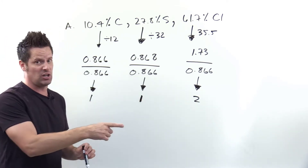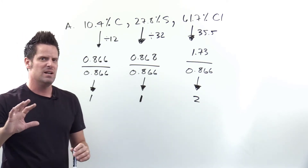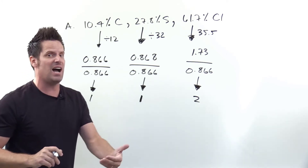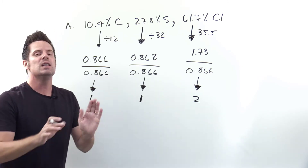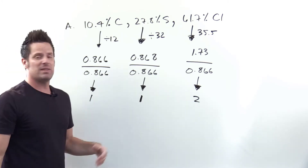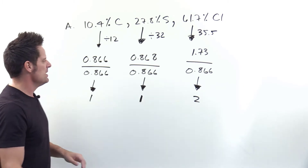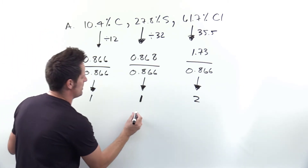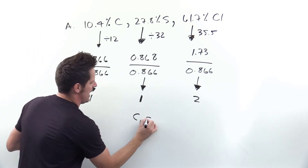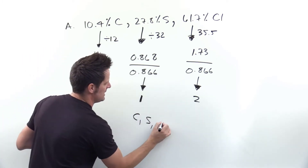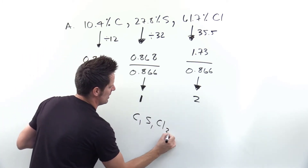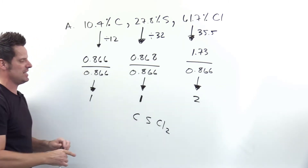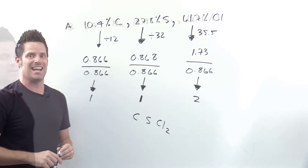Now if you have a decimal that's really in the middle of two integers, like 1.5 or 1.3, then you go on to a subsequent step. But that doesn't apply here — it will apply later. So these numbers are the subscripts. The empirical formula for this compound is C1S1Cl2, and since we drop the 1 subscripts, that's written as CSCl2. That's the empirical formula for part A.